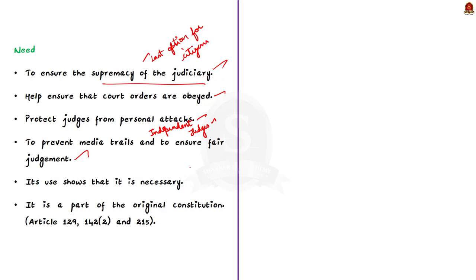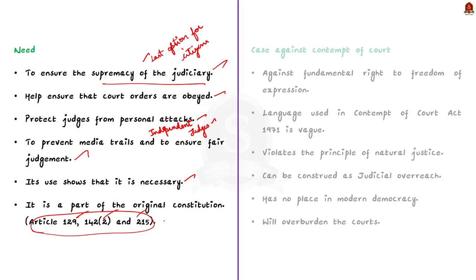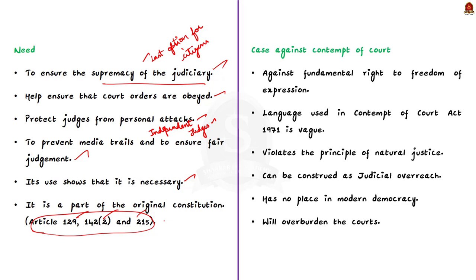Although the Contempt of Courts Act was enacted in 1971, the constitution makers included it in the original constitution in Articles 129, 142, and 215. So there is a need for contempt of court in our country, although it has merits and demerits. Justice Fali Nariman once famously said criminal contempt has fallen into disuse in most civilized countries around the world, but not in India.